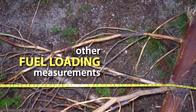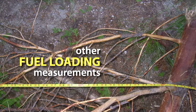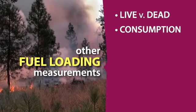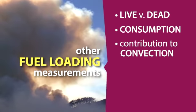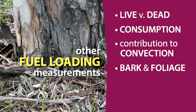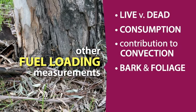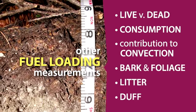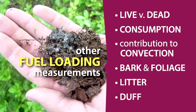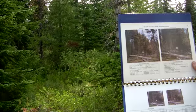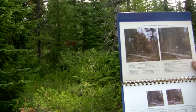Other fuel load measurements have been developed and are in use around the world to meet specific needs. These include the proportion of live fuel versus dead fuel, fuel load consumption (a post-fire measurement), fuel load contributing to convection, bark and foliage fuel loading (necessary when these materials contribute greatly to fire behavior, such as in some eucalyptus forests in Australia), litter fuel loading, and duff fuel loading. Separate videos will cover the various sampling methods used for inventorying fuels, including direct field inventories, the use of photo series as comparisons, and more recently, the use of remote sensing.